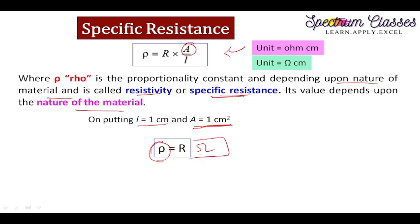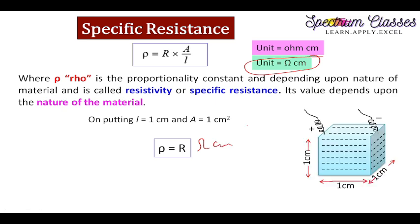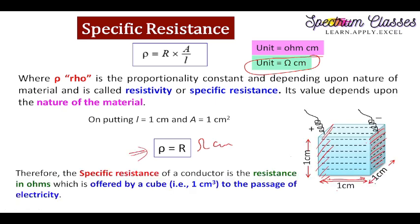Since rho equals R when A = 1 cm² and L = 1 cm, and R is in ohms, the unit of rho is ohm·cm. This is because putting units into R·A/L gives ohm × cm² / cm = ohm·cm. Therefore, specific resistance is the resistance in ohms offered by a cube of 1 cubic centimeter to the passage of electricity — this is termed specific resistance or resistivity.